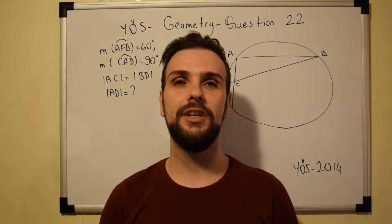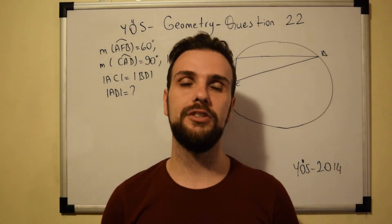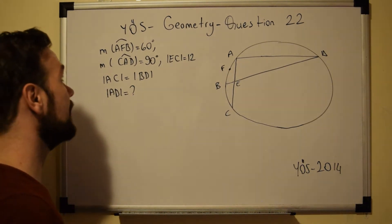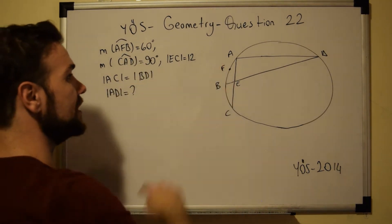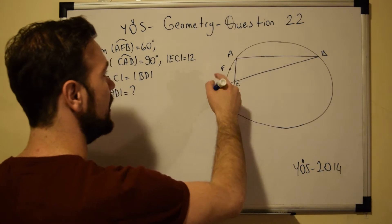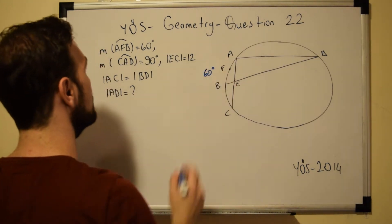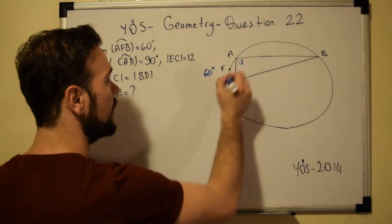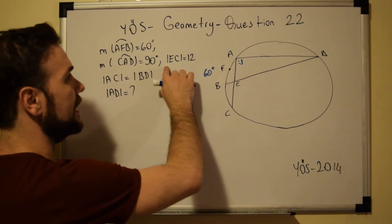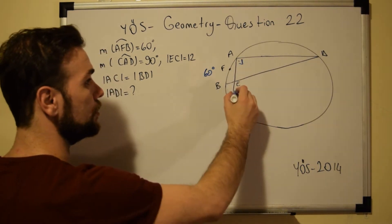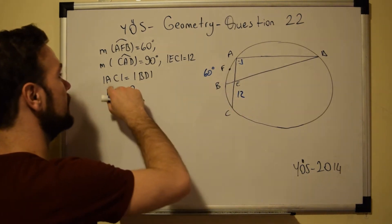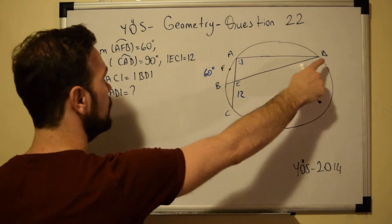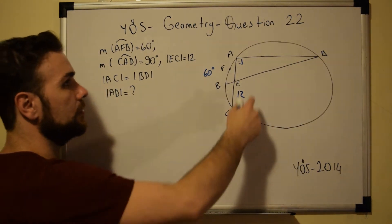Welcome to question number 22 of the U.S. examination geometry section. In this question we are dealing with circles. We have arc AFB equal to 60 degrees, angle CAD equal to 90 degrees — so this is a right angle — side EC equal to 12, and sides AC equal to BD. We are asked for the value of side AD.